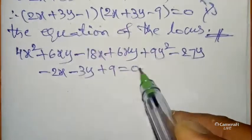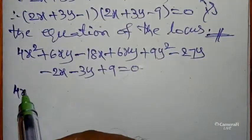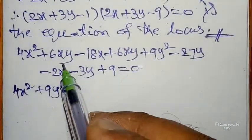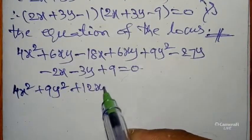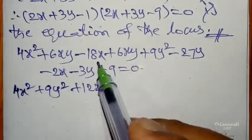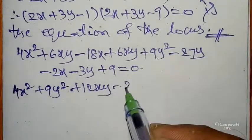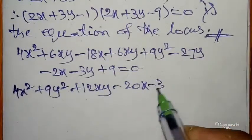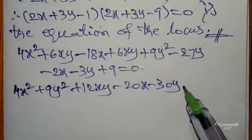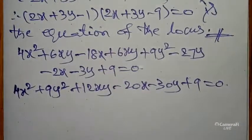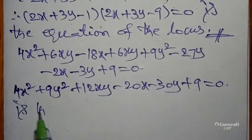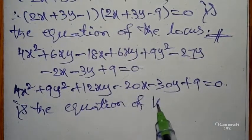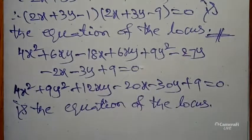Next, minus 1 multiply inside: -1 into 2x is -2x, -1 into 3y is -3y, minus into minus is plus 1 times 9 is 9 equals 0. Write in serial: 4x² + 9y² + 6xy + 6xy is 12xy - 18x - 2x is -20x - 27y - 3y is -30y + 9 = 0 is the equation of the locus.